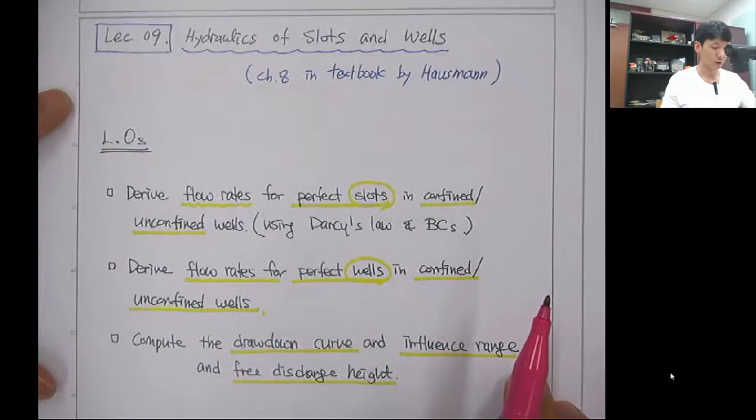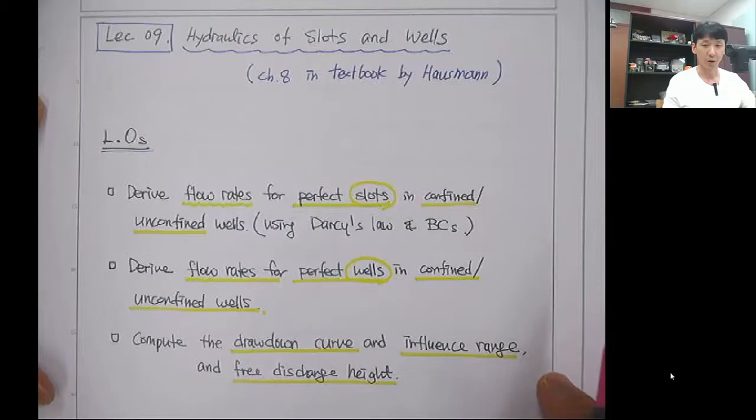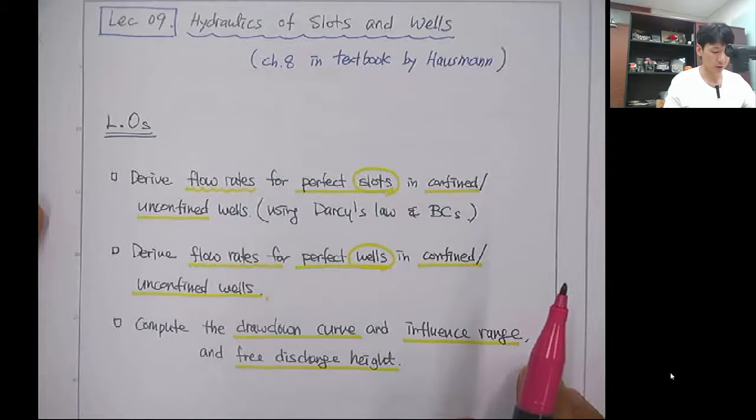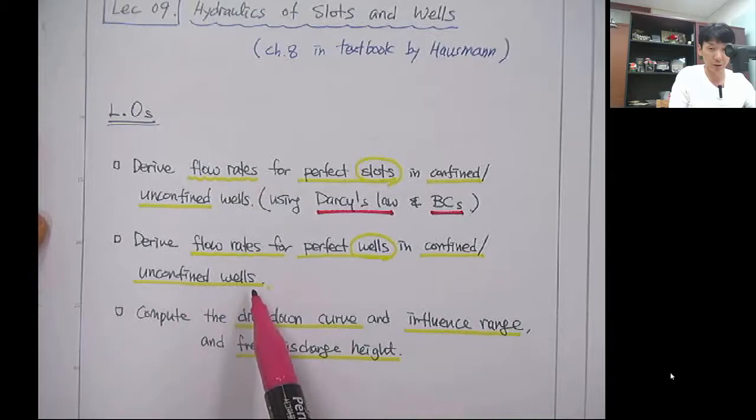Hello everyone. This is Lecture 9, which is Hydraulics of Slots and Wells, from Chapter 8 of the textbook by Hausmann. The learning objectives of this class are to derive flow rates for perfect slots in confined and unconfined aquifers using boundary conditions and Darcy's law, and also to derive flow rates for perfect wells in confined and unconfined aquifers.